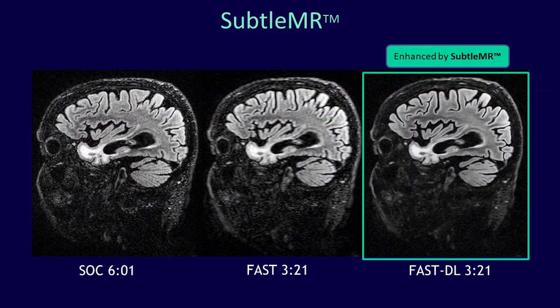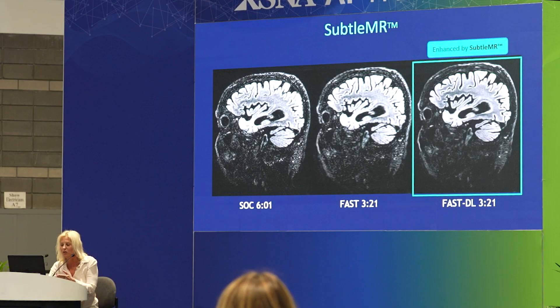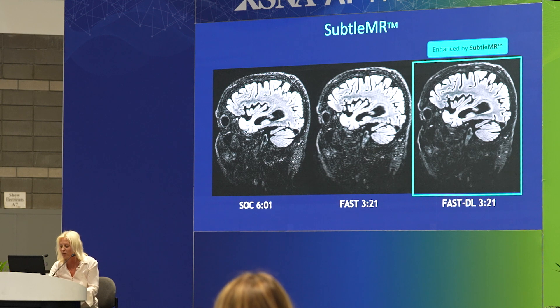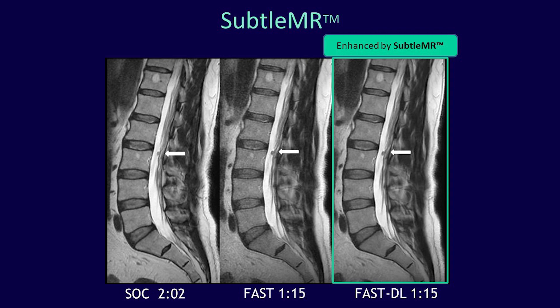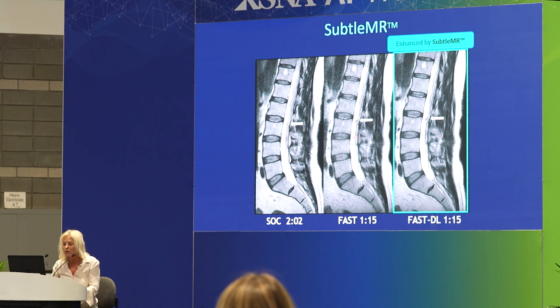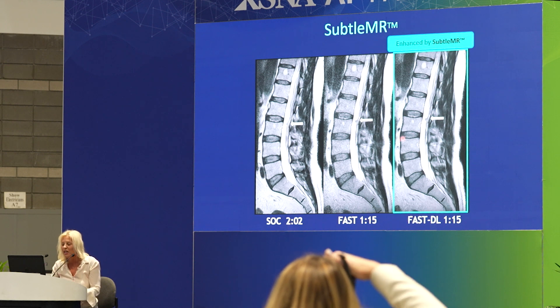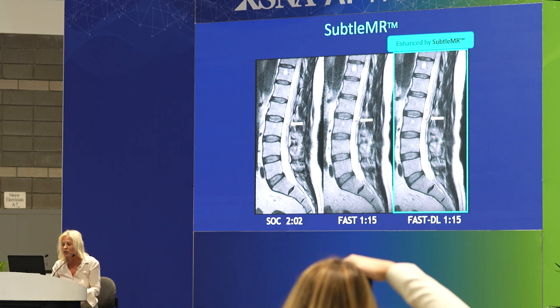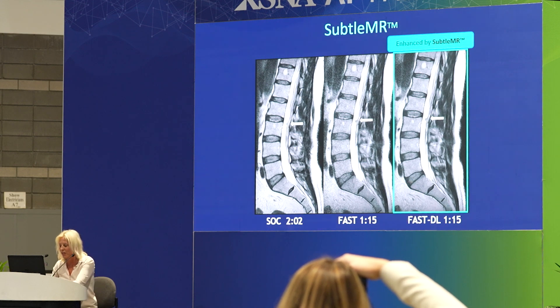Let's take a look now at Subtle MR. It's the same sort of idea — standard of care on the left, that fast in the middle. We've reduced the time in half and then we apply deep learning and we have a big bump in signal to noise and contrast to noise. Comparing these images, the fast DL image is actually much better and we went a lot faster. If you look at this little schwannoma on the standard of care, you get a bump in the CNR on the fast image but the image is noisy. On the right, we maintain that high contrast to noise ratio and we've also increased the signal to noise.